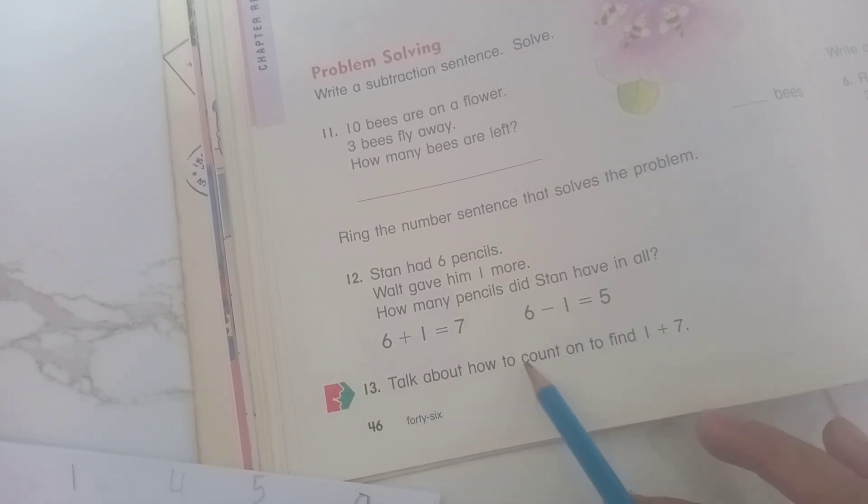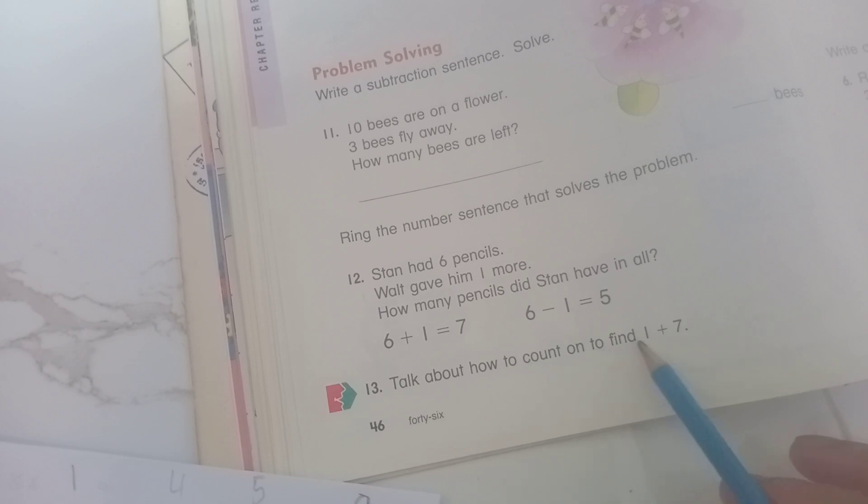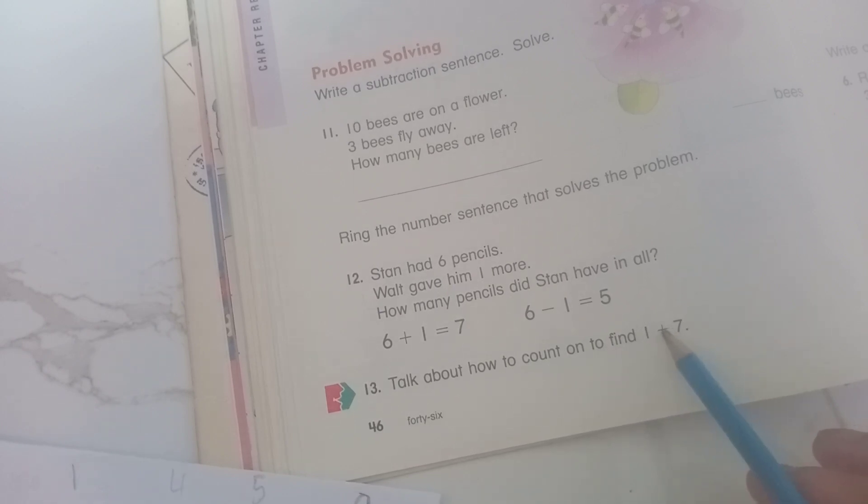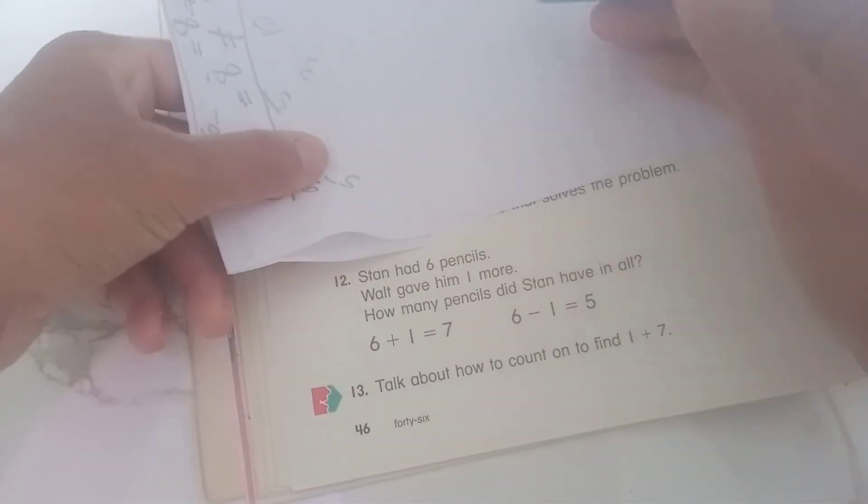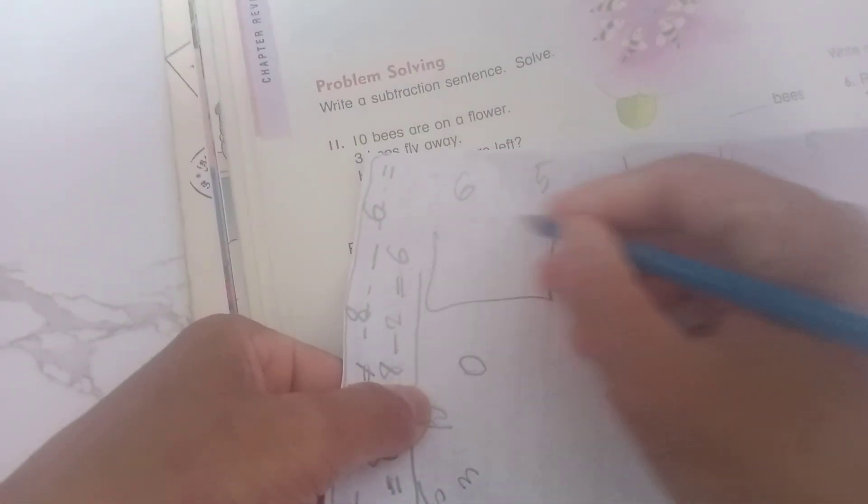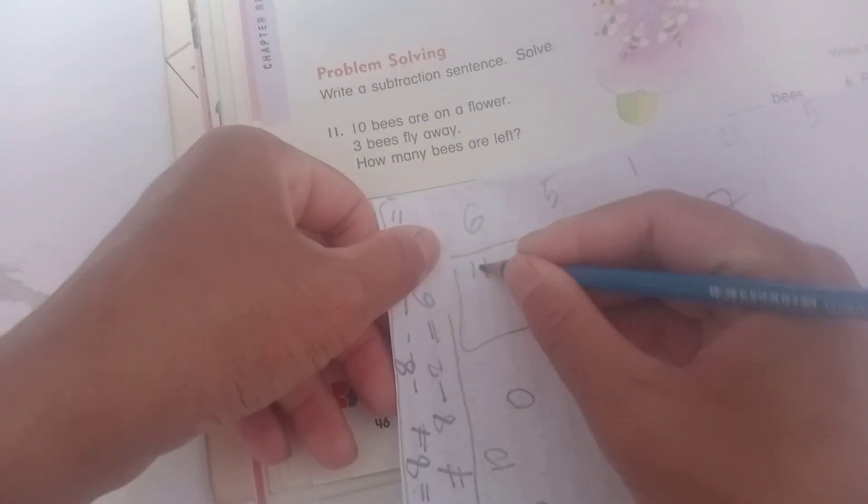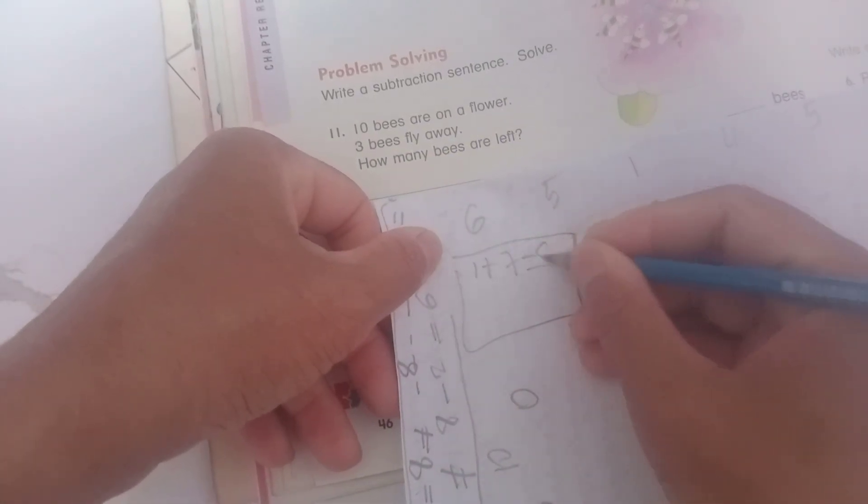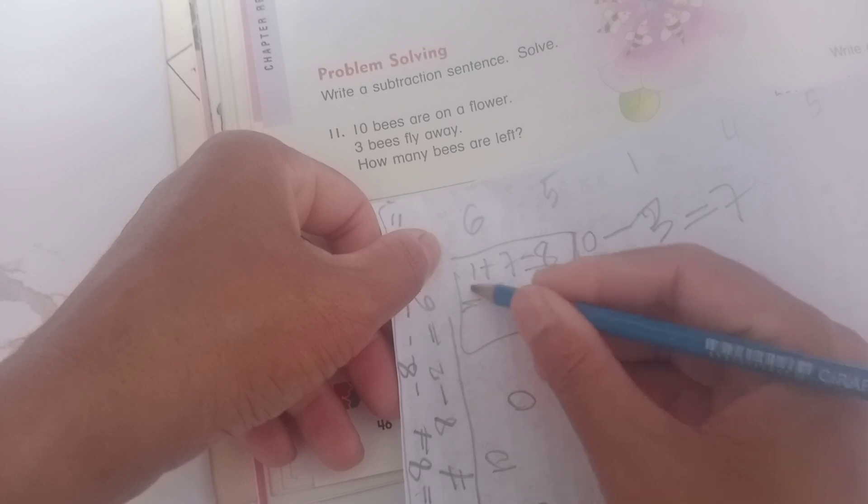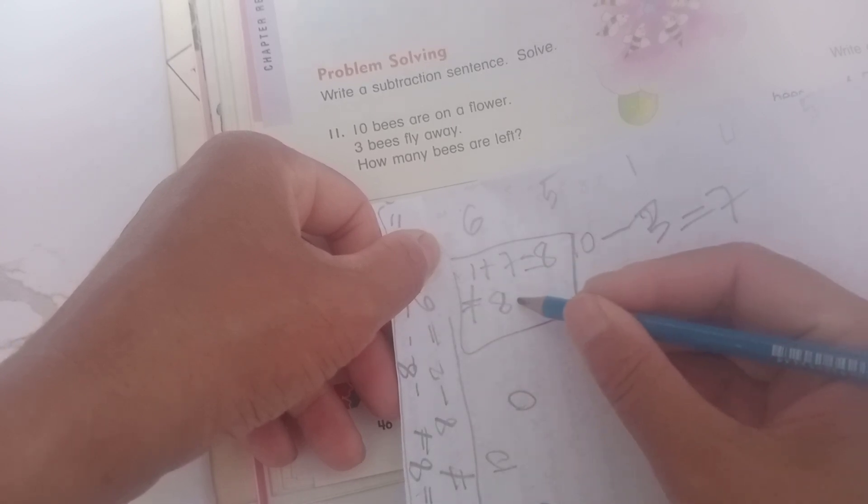Learn about how to count on to find one plus seven. One plus seven. You can write like this: one plus seven equals eight. The difference: eight minus seven equals one.